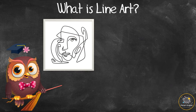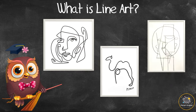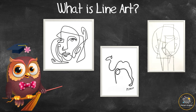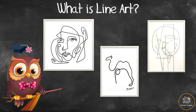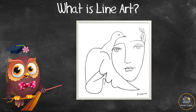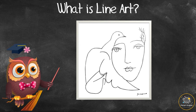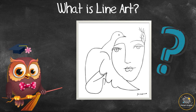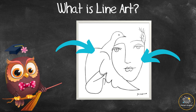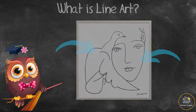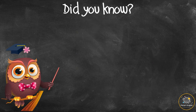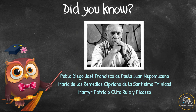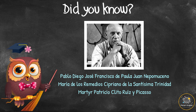He drew people, animals, and objects in single unbroken lines, which is more difficult than it looks. Look at this drawing — what can you see? Can you see a bird and a face?